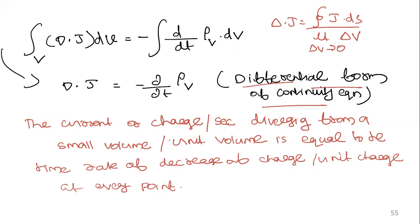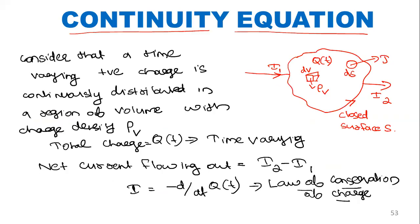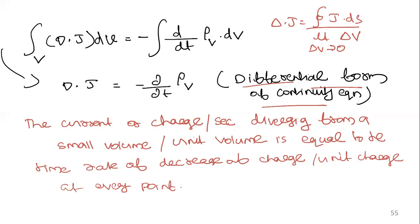The continuity equation of current is normally asked in exams. You should realize the law of conservation of charge: the net charge coming out should be balanced by a decrease in the charge inside. Then express q(t) as the integral of ρᵥ dv, apply the divergence theorem, and finally state that ∇·j = −∂ρᵥ/∂t.